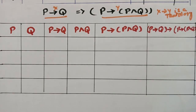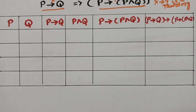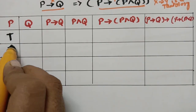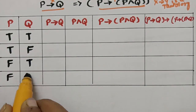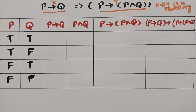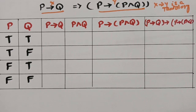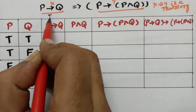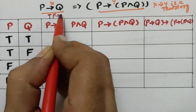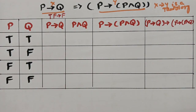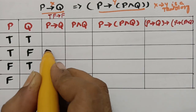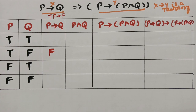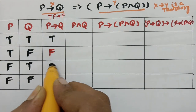There are only two propositions, so we take true-true, true-false, false-true, false-false. For p→q (implication): check for true-false — there is one, write false. The remaining entries are all true.